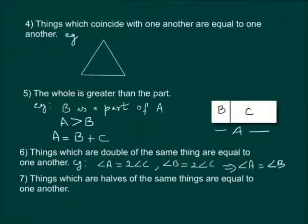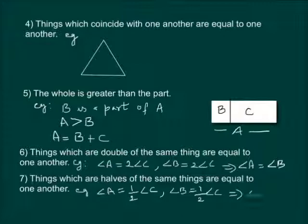Seventh axiom says, things which are half of the same things are equal to one another. For example, if in a polygon, angle A is equal to half of angle C and angle B is equal to half of angle C, then angle A is equal to angle B.